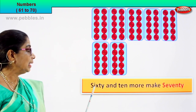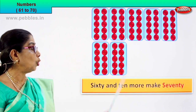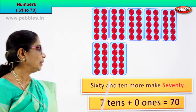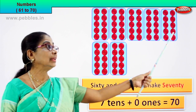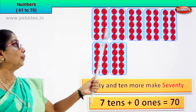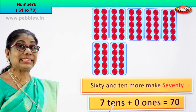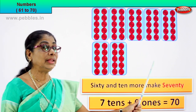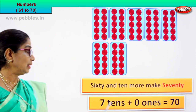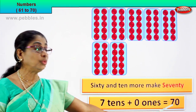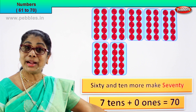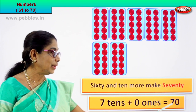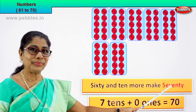Sixty and ten more make seventy. What is seventy? Seven tens. One, two, three, four, five, six, seven — seven tens is seventy. Seven tens plus zero ones equal to seventy. Seventy is the number. How do we write its name? Seventy. This is the number and this is the name.